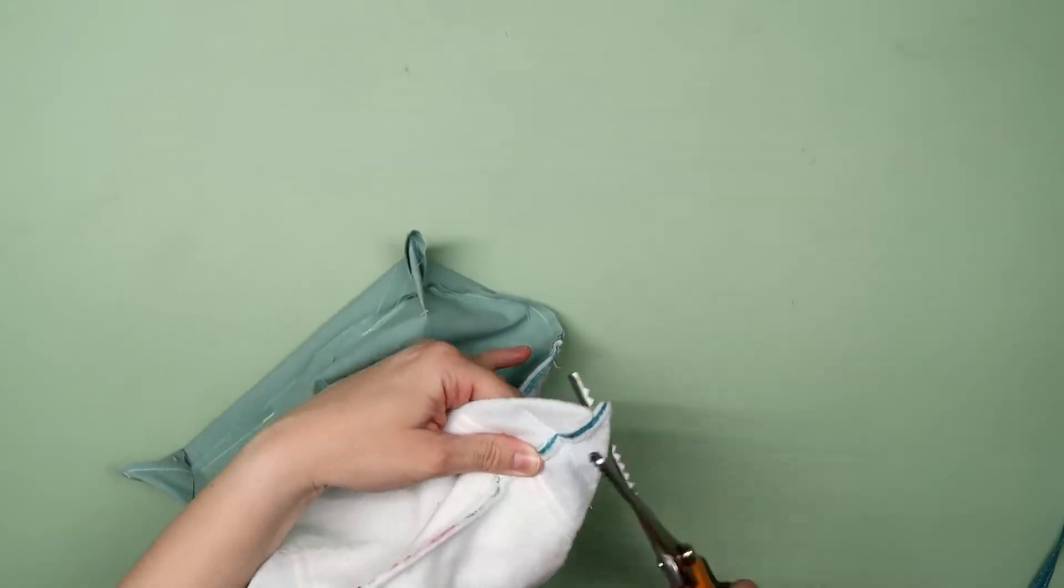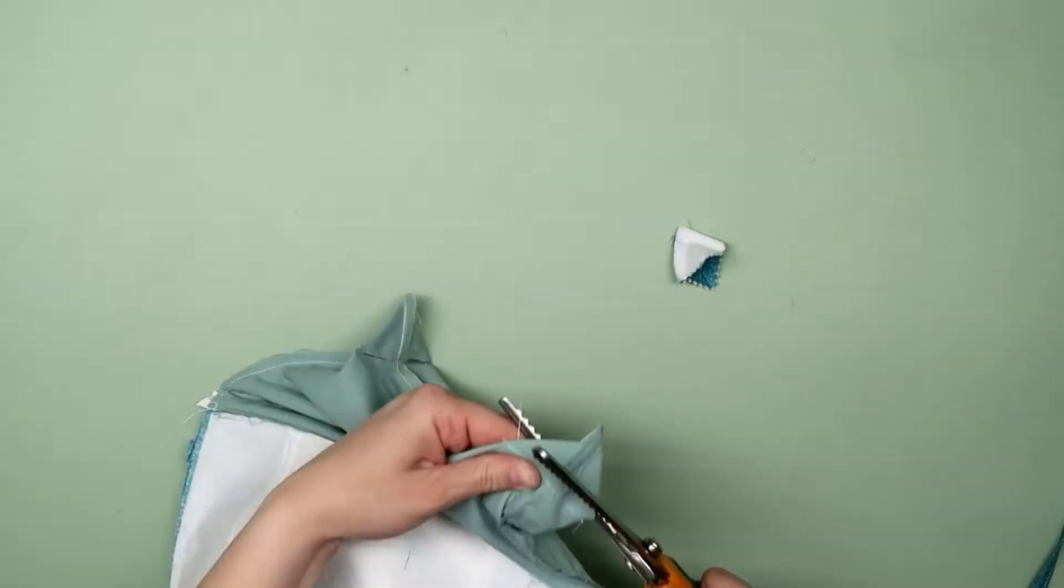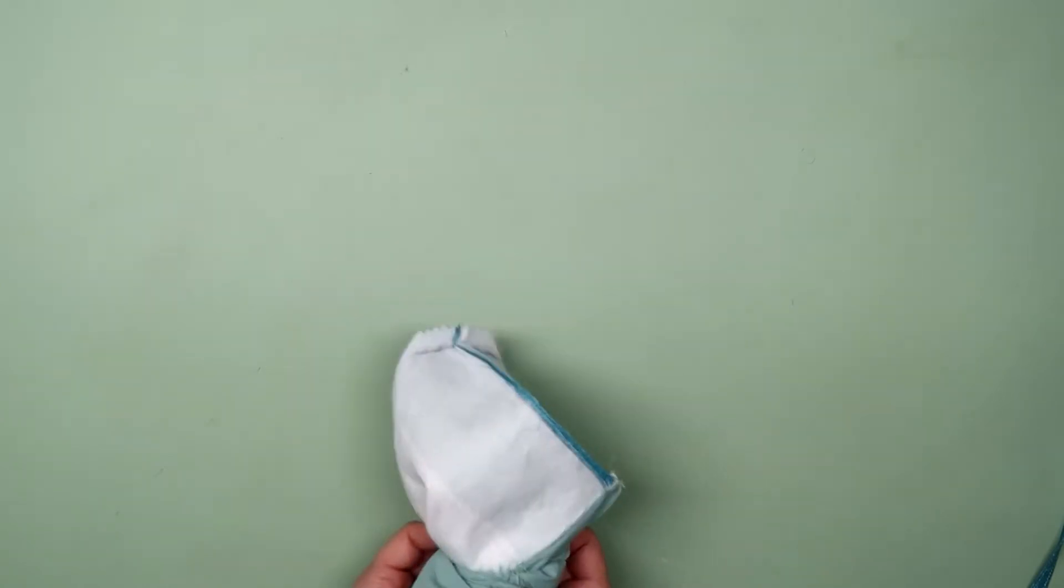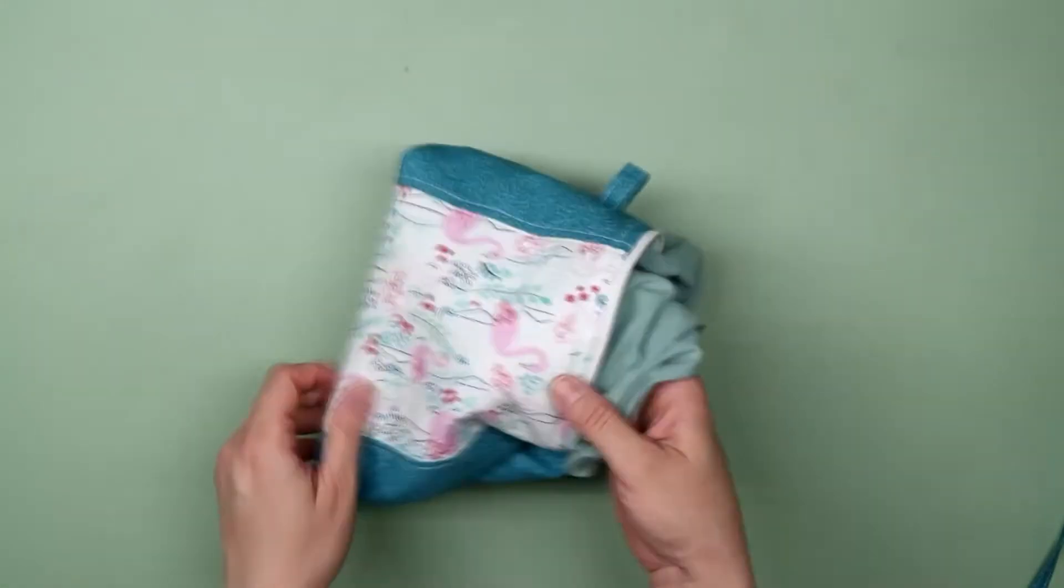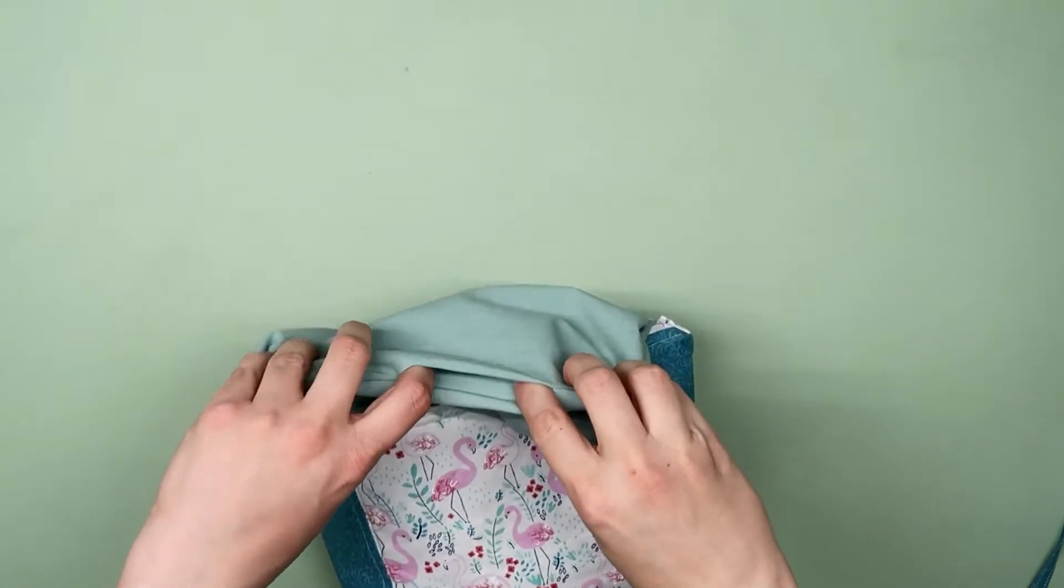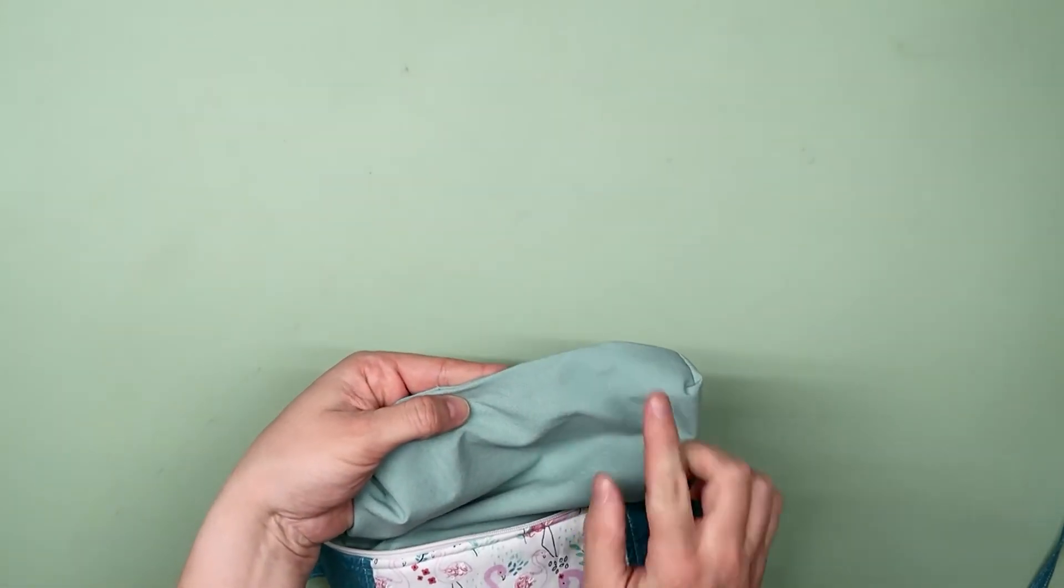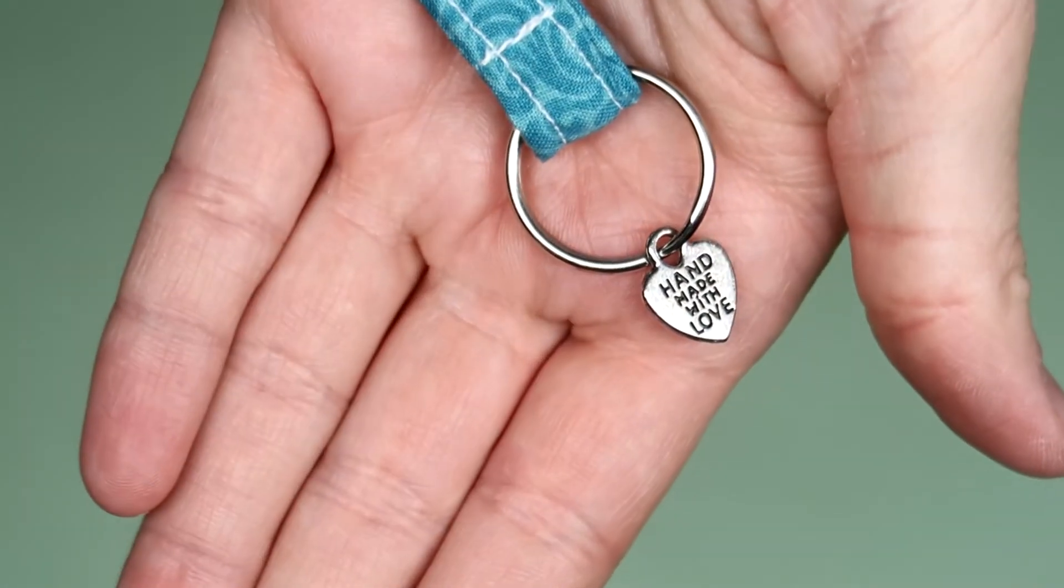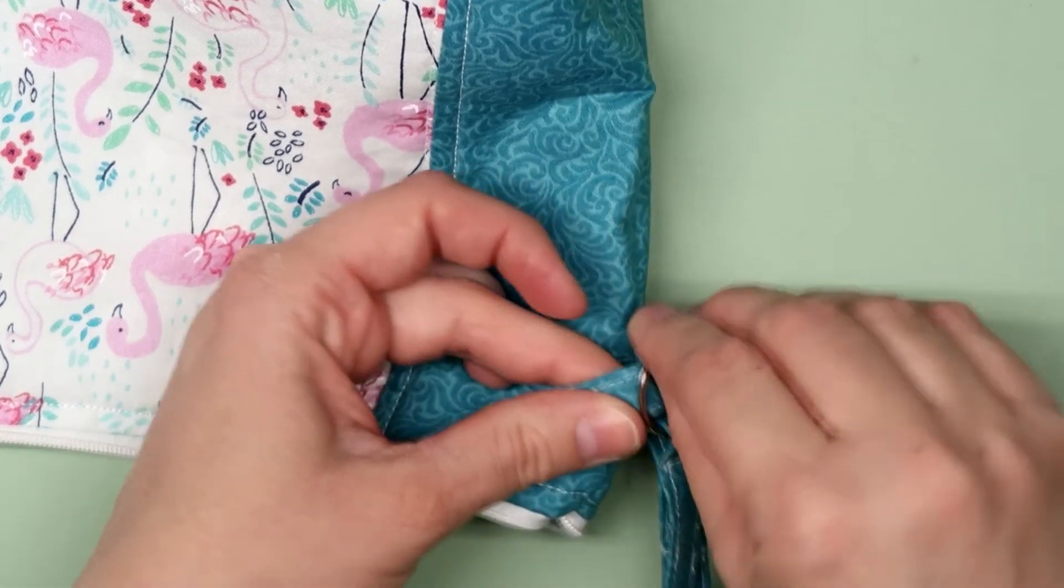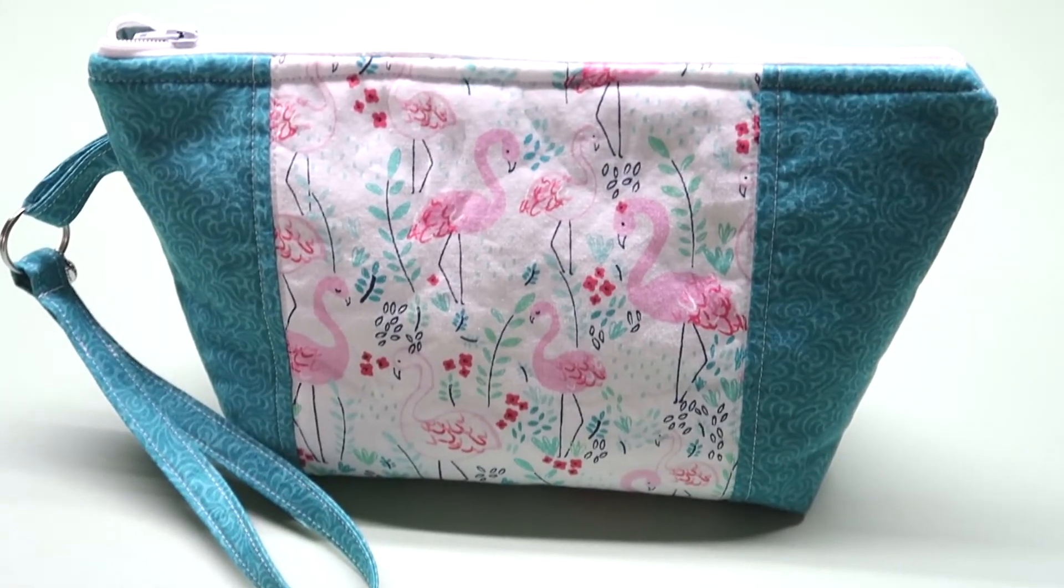Then take some pinking shears and trim those corners down. Flip everything right side out. Don't forget to sew up that hole in the lining fabric. You can either take it to the sewing machine or hand stitch it. Add a charm to the split ring if you have one. Then add that to the tab you sewed on earlier. And voila, you are done.